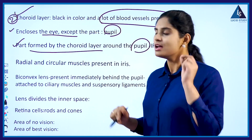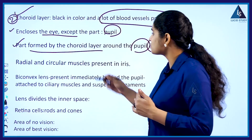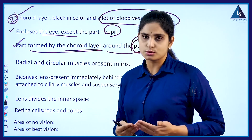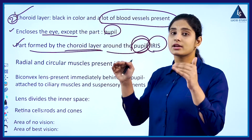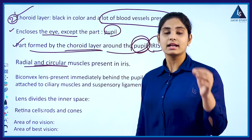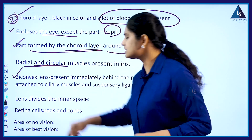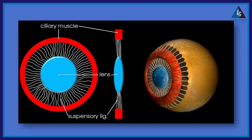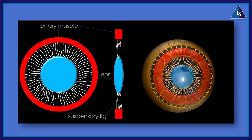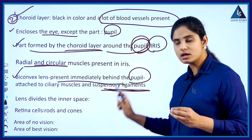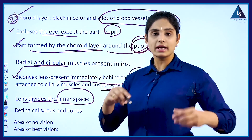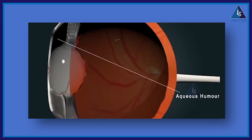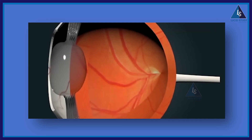The part formed by the choroid layer around the pupil is called the iris. The iris contains radial and circular muscles. A biconvex lens is present immediately behind the pupil, which is attached to two structures: the ciliary muscles and the suspensory ligaments. The lens divides the inner space of the eye into two chambers.